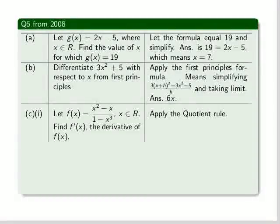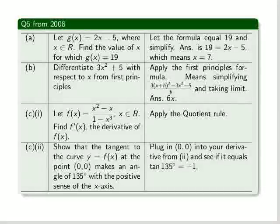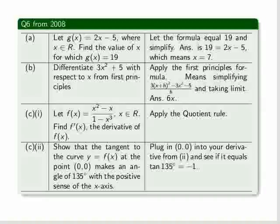The third part of this question was clearly a quotient rule, because we have a numerator function and a denominator function. And there's a second part to that section, where we're told that the curve y equals f of x at the point 0, 0 makes an angle of 135 degrees with the positive sense of the x-axis. Well you plug in 0, 0 into the derivative that you just calculated, and see if it equals tan 135 degrees, which happens to be minus 1.